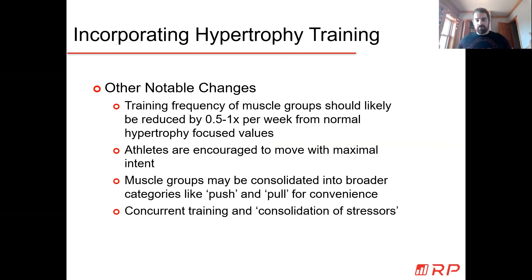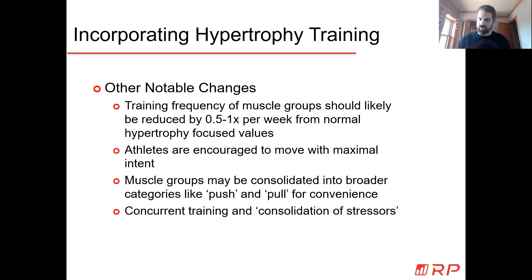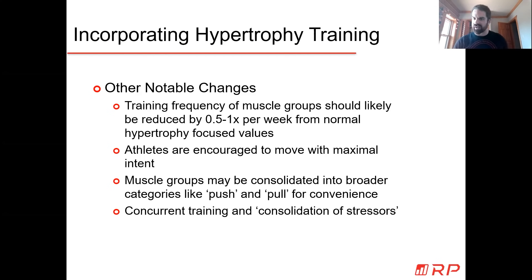You're probably going to reduce your training frequency per muscle group by about half a session to one session per week less than you would normally do for hypertrophy training. Meaning if you trained biceps four times a week when not doing sports, when doing sports and hypertrophy, you might do it three times a week. We say a half because sometimes you have lighter sessions where a muscle group is not directly but still somewhat stimulated. Anywhere between a half session to one session less per week is a good starting point.